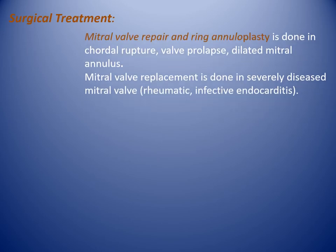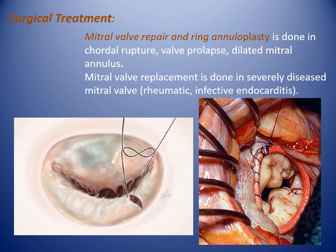Surgical treatment: mitral valve repair and ring annuloplasty is done in chordal rupture, valve prolapse, and dilated mitral annulus. Mitral valve replacement is done in severely diseased mitral valve, rheumatic or infective endocarditis. Pictures show quadrangular resection from the posterior mitral leaflet, and after quadrangular resection and repair, ring annuloplasty is done.